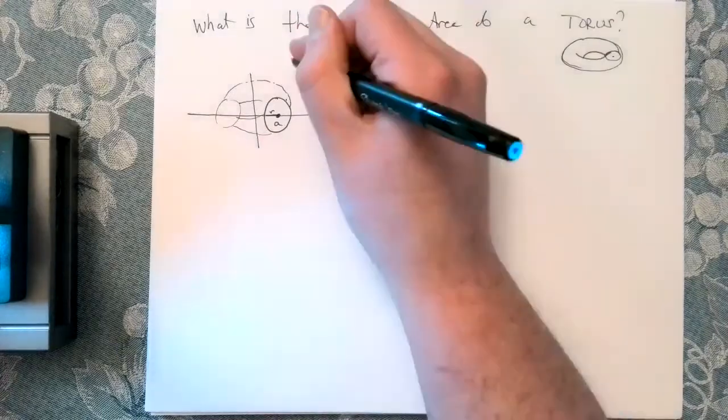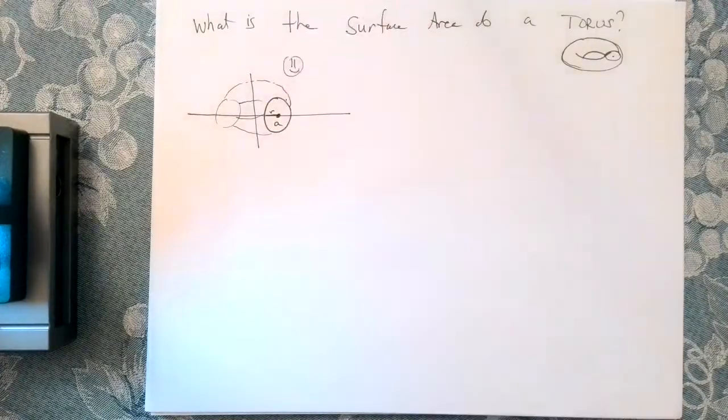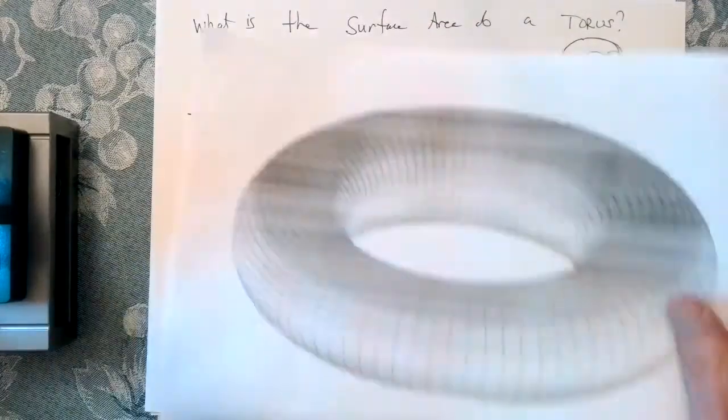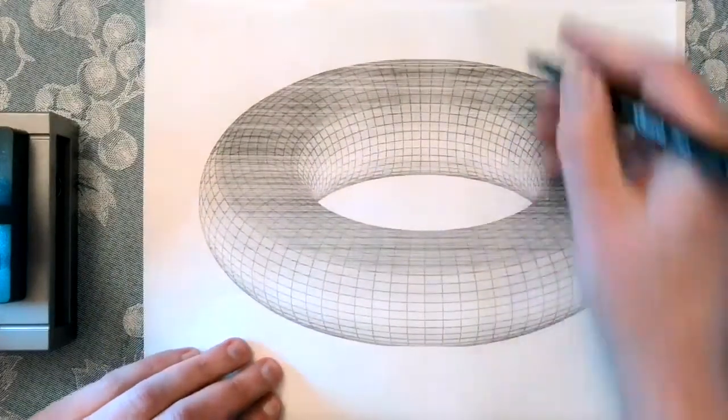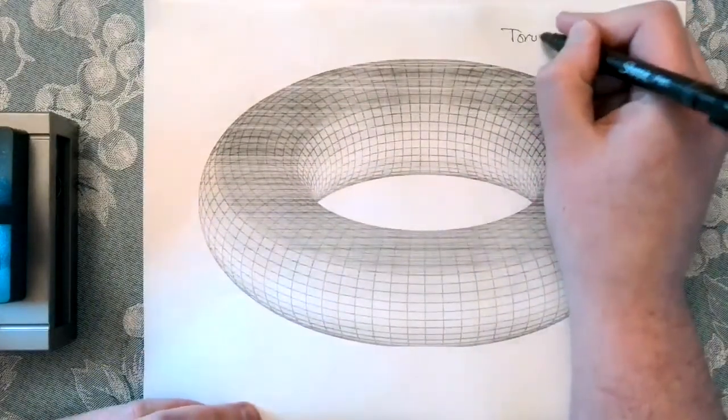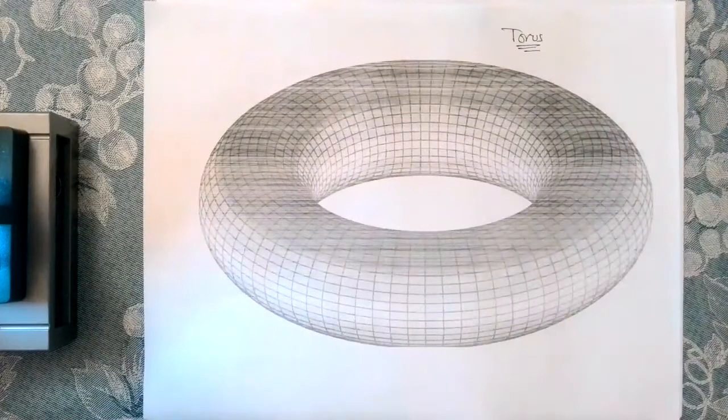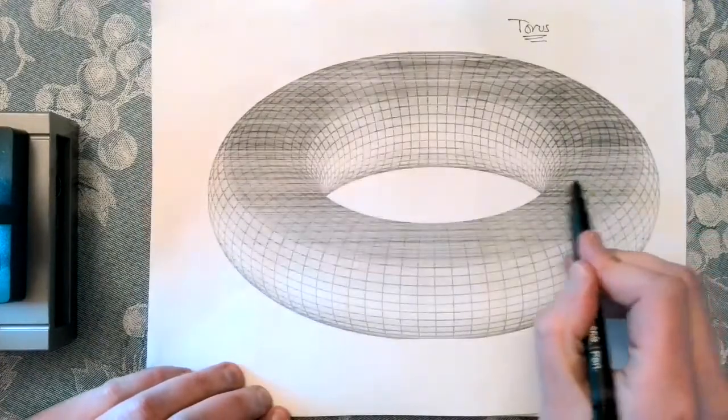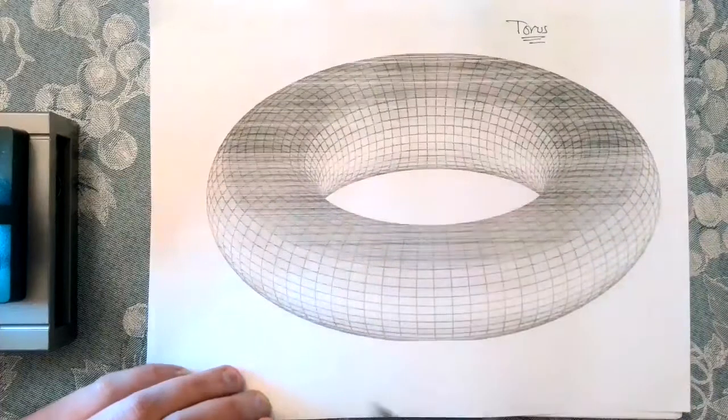Now, if I could draw, you know how my drawing skills are. If I could draw, that would look a little bit more like this. That would be our torus. So start with some circle, spin it around to generate the torus.